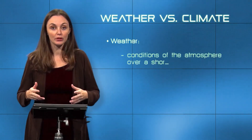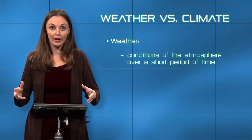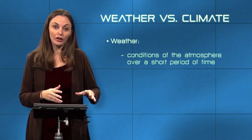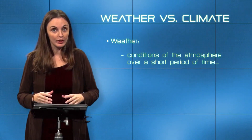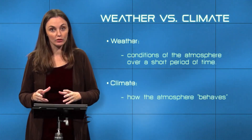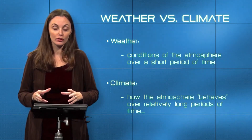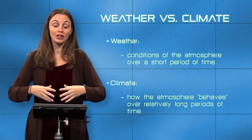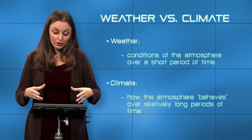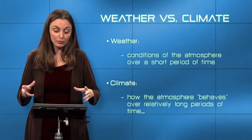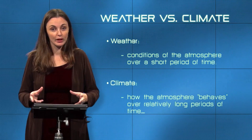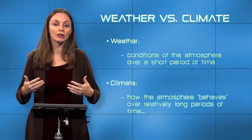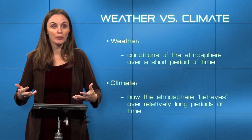Weather is the conditions going on in the atmosphere over a short period of time — hours to days to potentially weeks — and it's mainly controlled by air pressure. Climate is very different: it's how the atmosphere is going to behave over a certain region of Earth's surface over a long period of time, typically decades or even longer. Not only does weather change from day to day for purely natural reasons, but climate also changes over really long periods of time. Most things that control climate are long-acting, taking hundreds of thousands to potentially millions of years to produce big change.